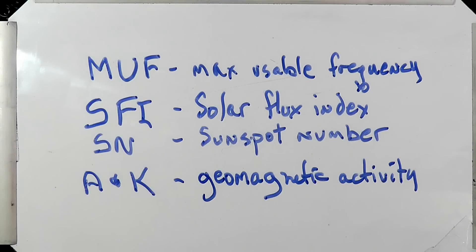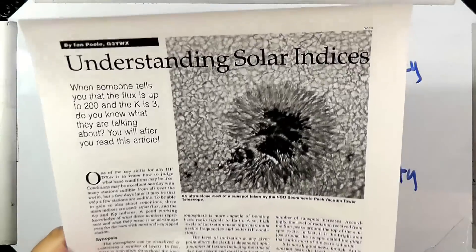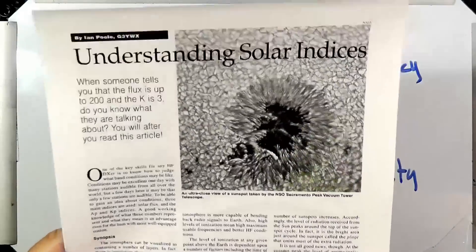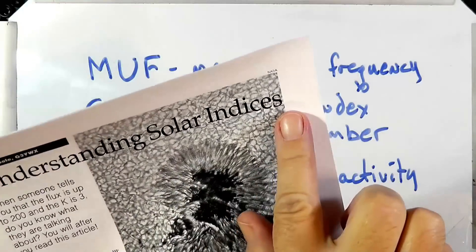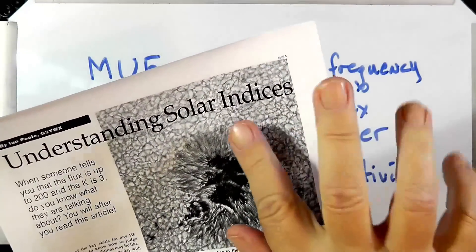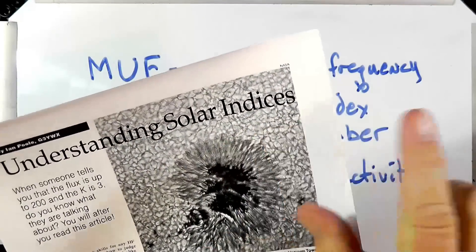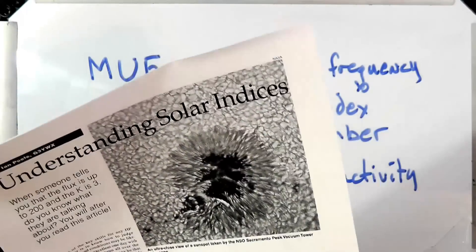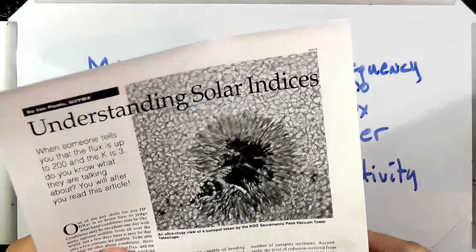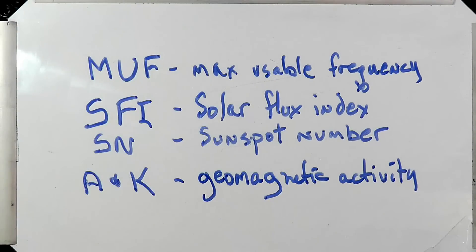The SFI is the Solar Flux Index. According to this article in QST from September 2002, on understanding solar indices — by the way, indices is the plural of index. In science, people like to use indices as the plural of index. The Solar Flux is an attempt to measure sunspot activity on the sun.